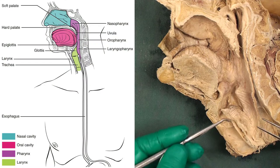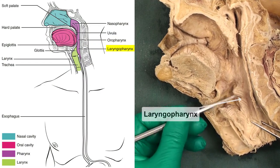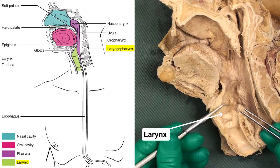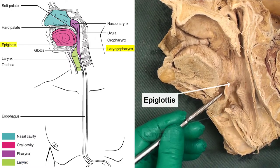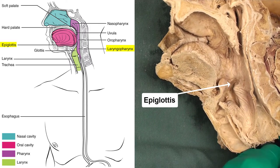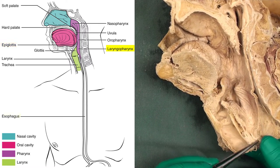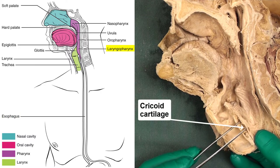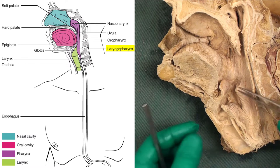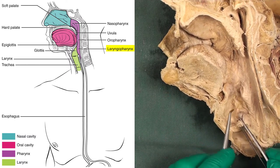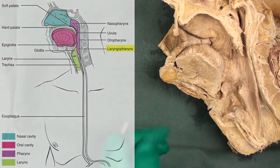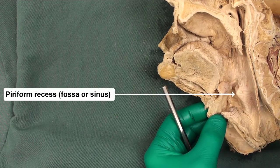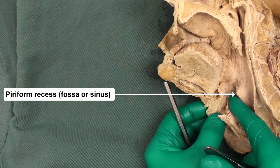The laryngopharynx is located behind the larynx. This is the larynx and that is the epiglottis. The laryngopharynx stretches from the epiglottis to the esophagus, almost at the level of the cricoid cartilage. Anteriorly, the laryngopharynx is connected to the laryngeal inlet, which opens into the larynx. On each side of this opening, we have an impression known as the piriform recess, where food can sometimes become stuck.